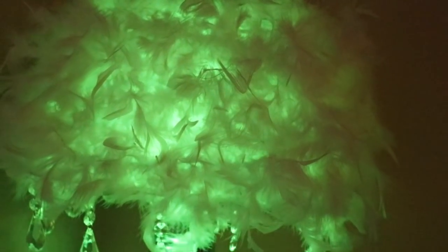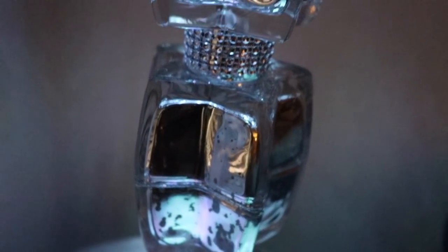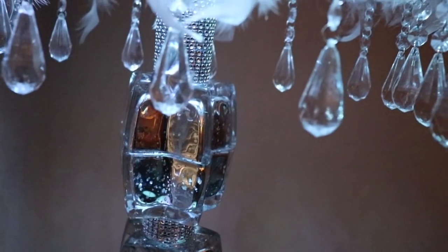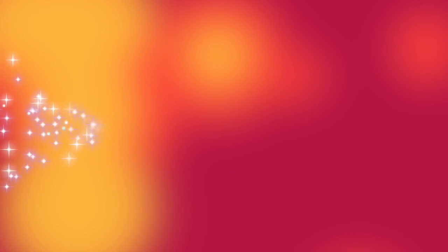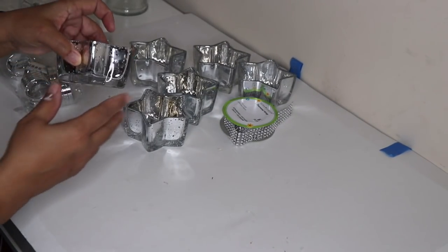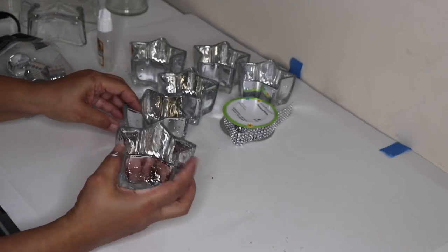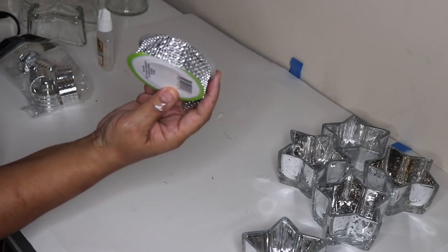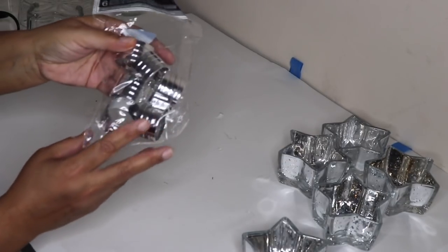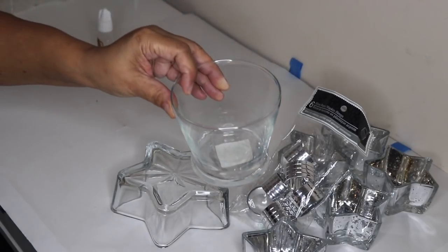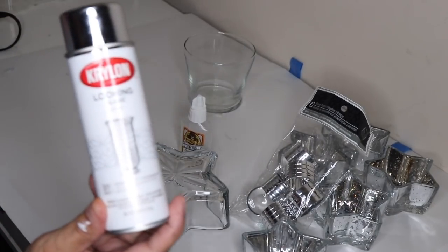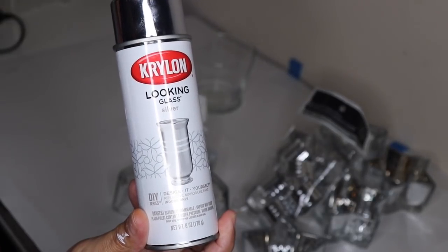You'll need six of these star shaped tea light holders, some diamond wrap from Dollar Tree this one has five rolls, Dollar Tree napkin rings, this star shaped dish, a candle holder, some type of strong glue, looking glass spray paint this is optional, and some hot glue.